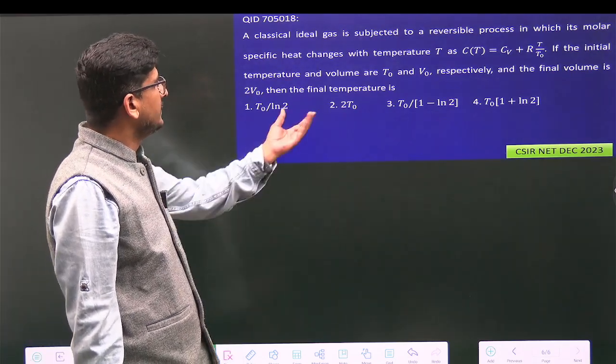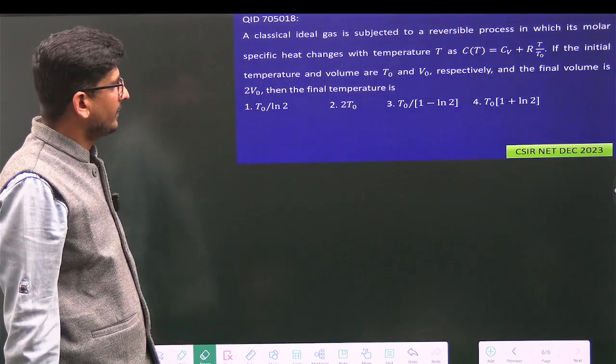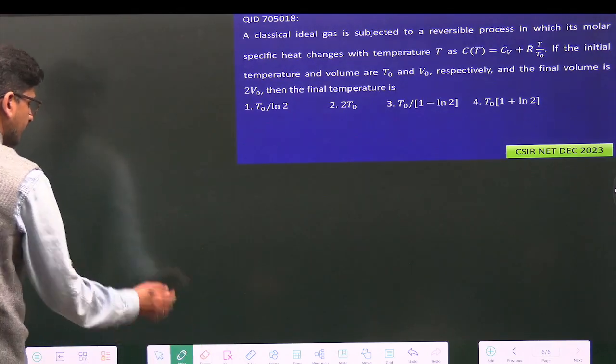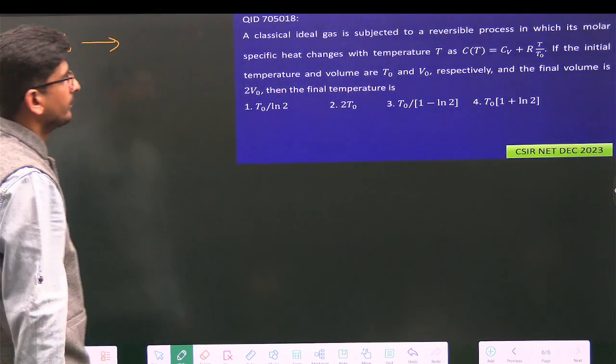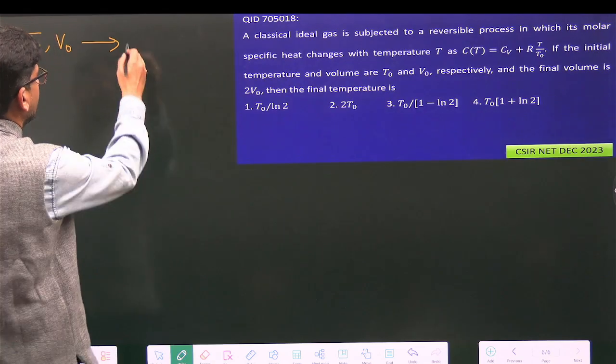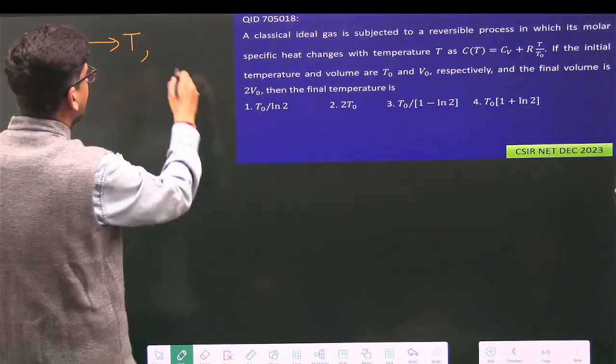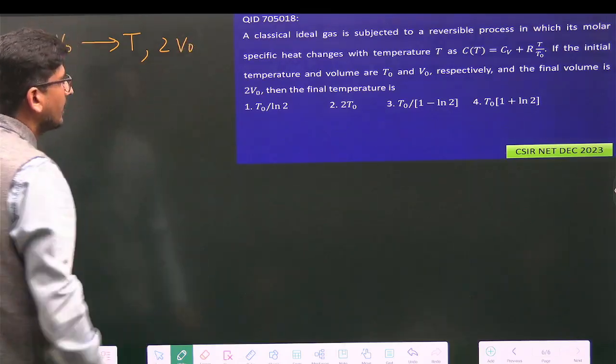The initial temperature and volume are T₀ and V₀ respectively. It goes from T₀, V₀ to the final temperature, which we want to calculate, and the final volume is given as 2V₀.